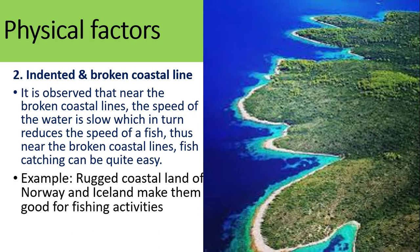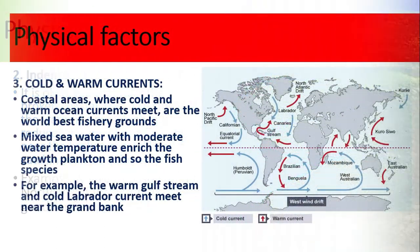Therefore, the rugged coastline of Norway and Iceland makes those areas good for fishing. The next factor is cold and warm ocean currents. Ocean currents play a major role in the fish-catching industry. Coastal areas where cold and warm ocean currents meet are the world's best fishery grounds, as they mix sea water with moderate temperature and encourage the growth of plankton and fish species.